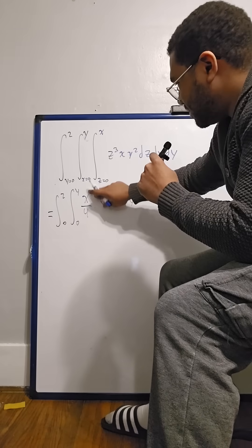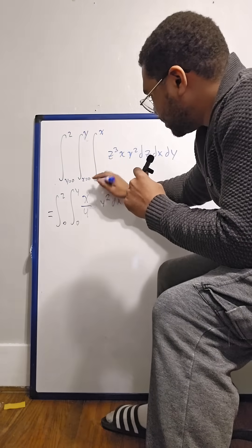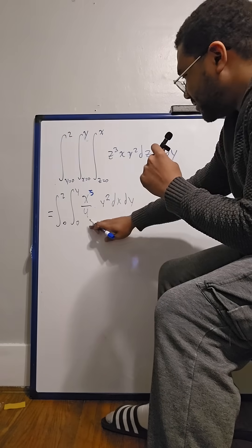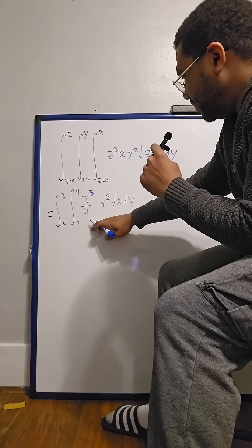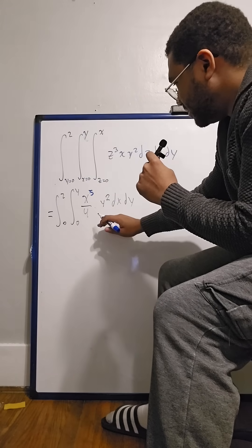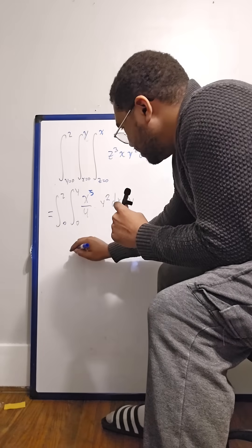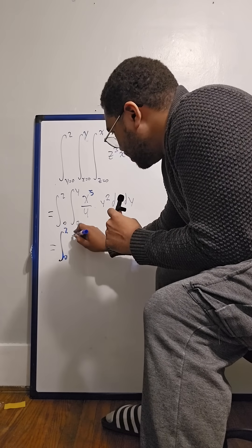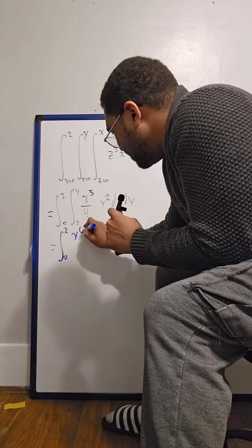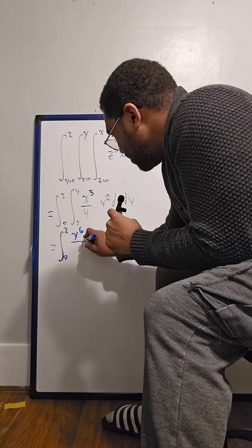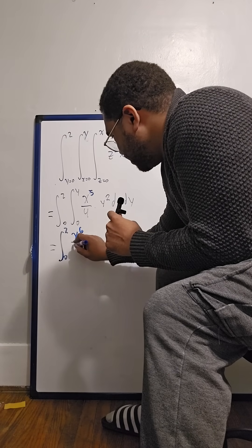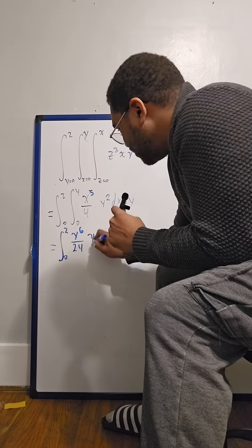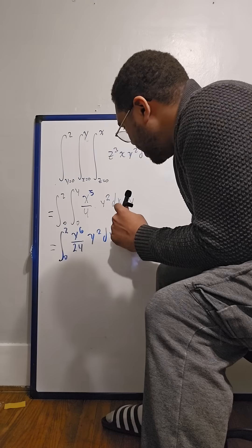Now this could be an x to the 5th. Now we take our second integral with respect to dx, which gives us 0 to 2, y to the 6th over 24, y squared dy.